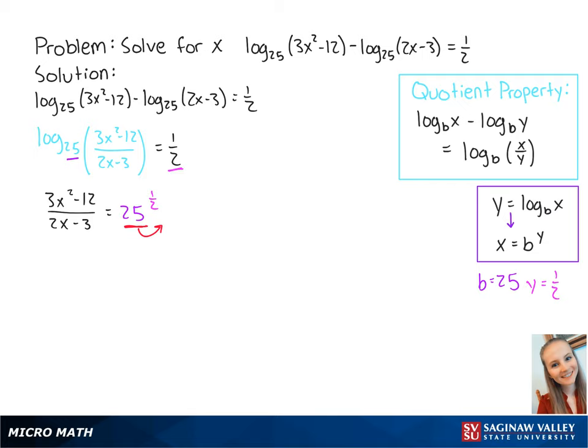25 to the half power equals the square root of 25. So we now have 3x squared minus 12 over 2x minus 3 equals 5.